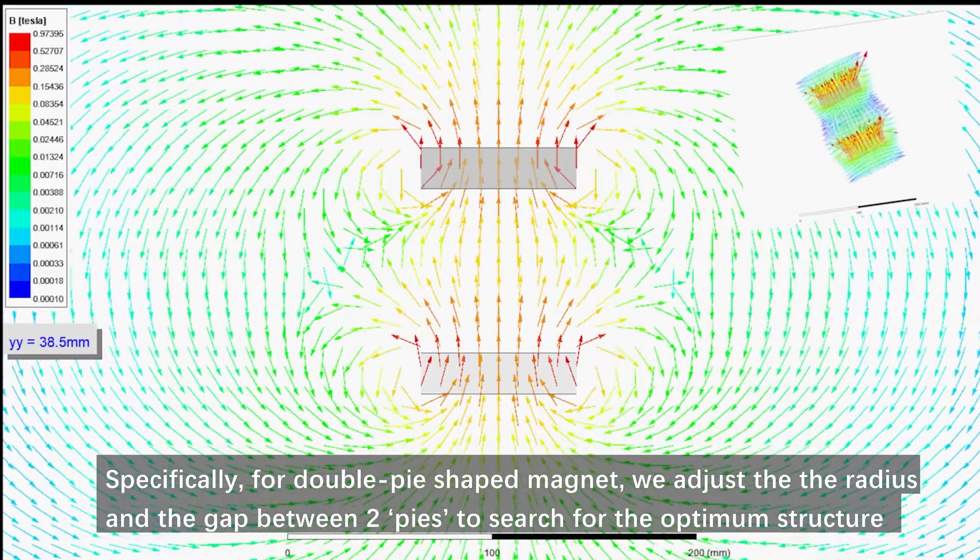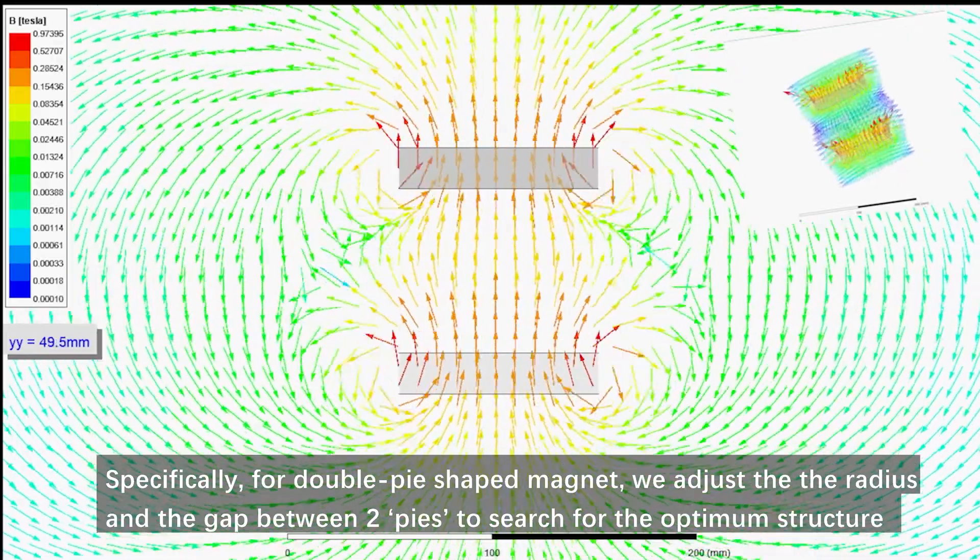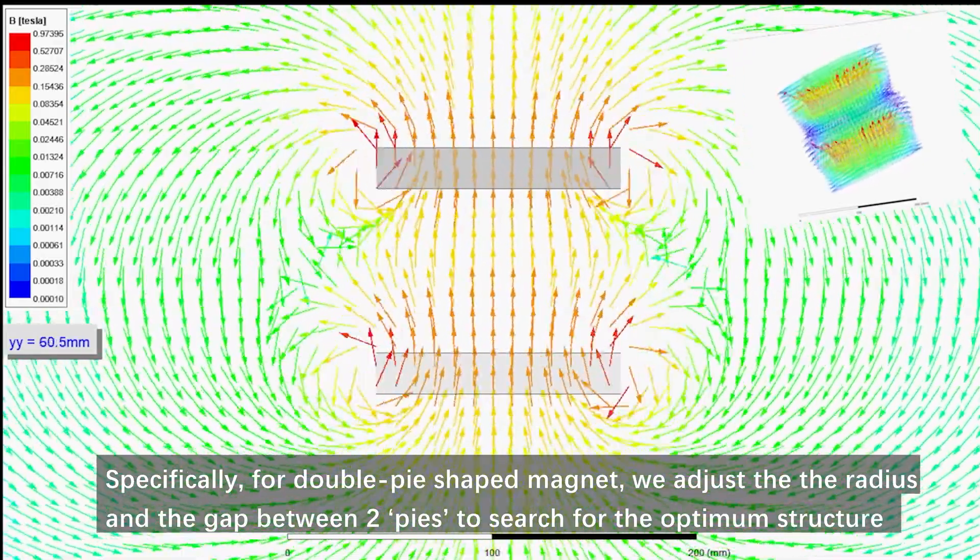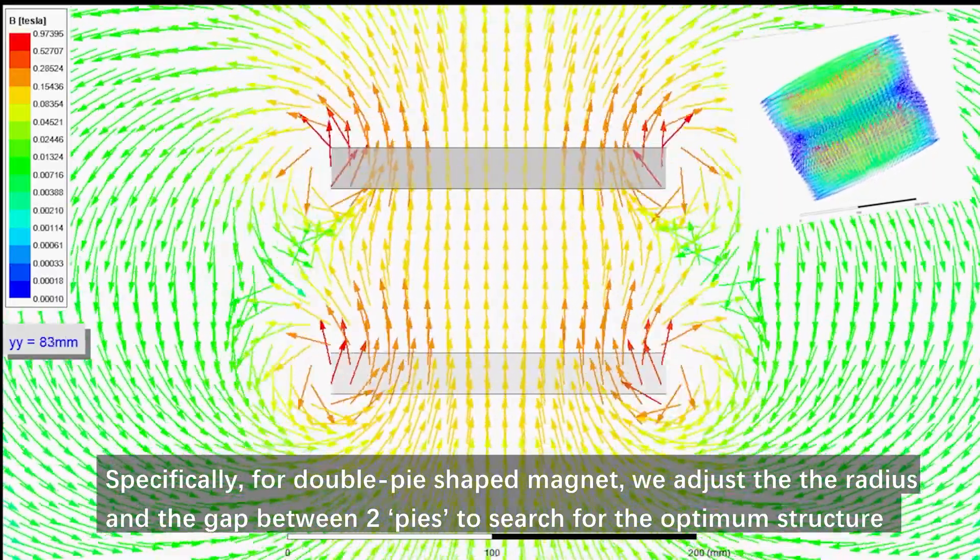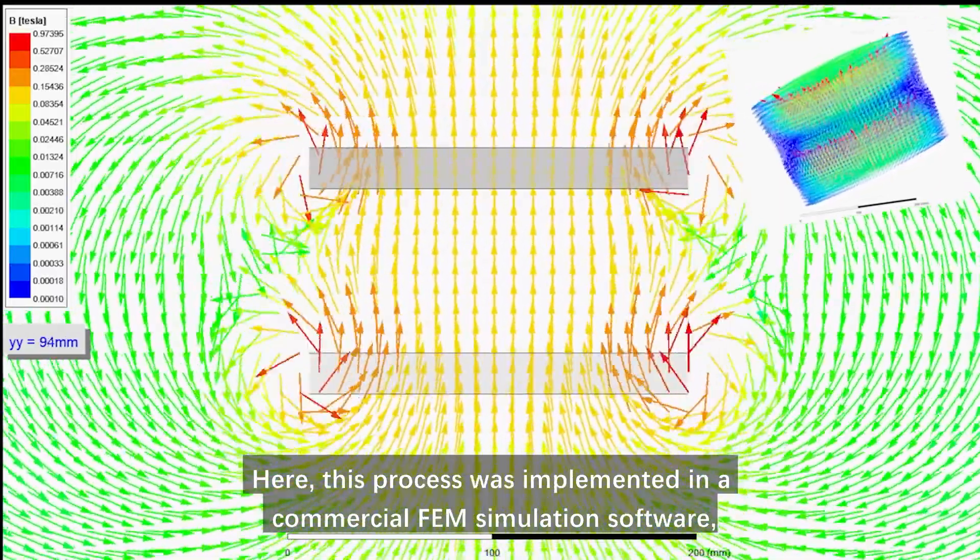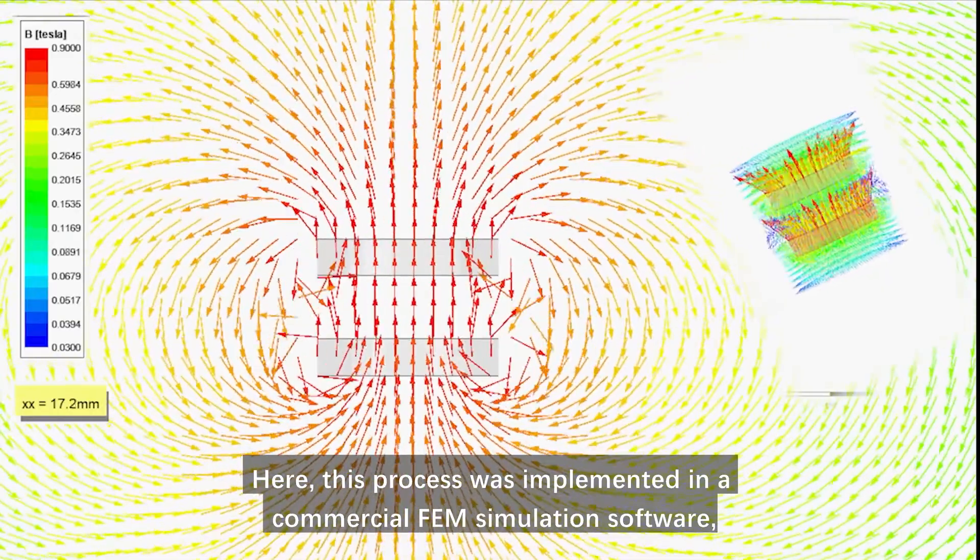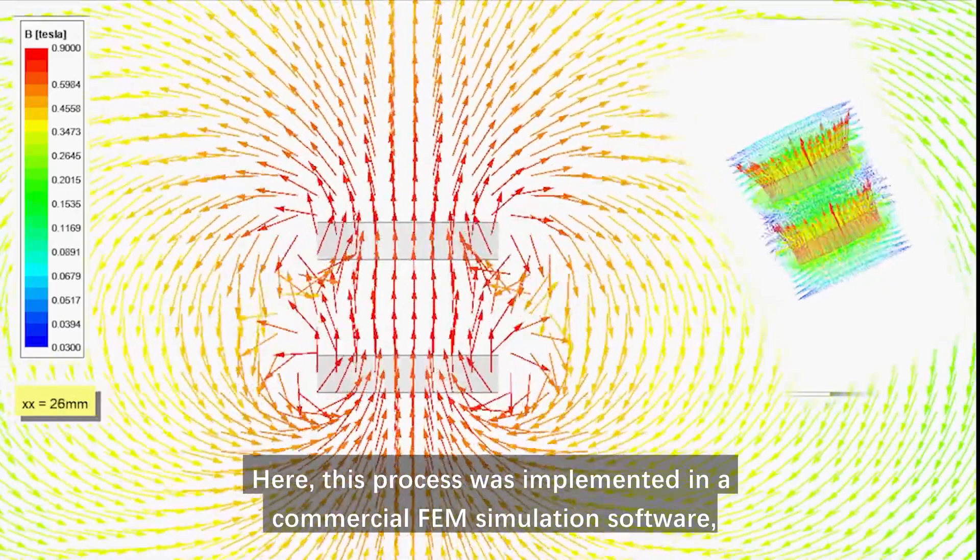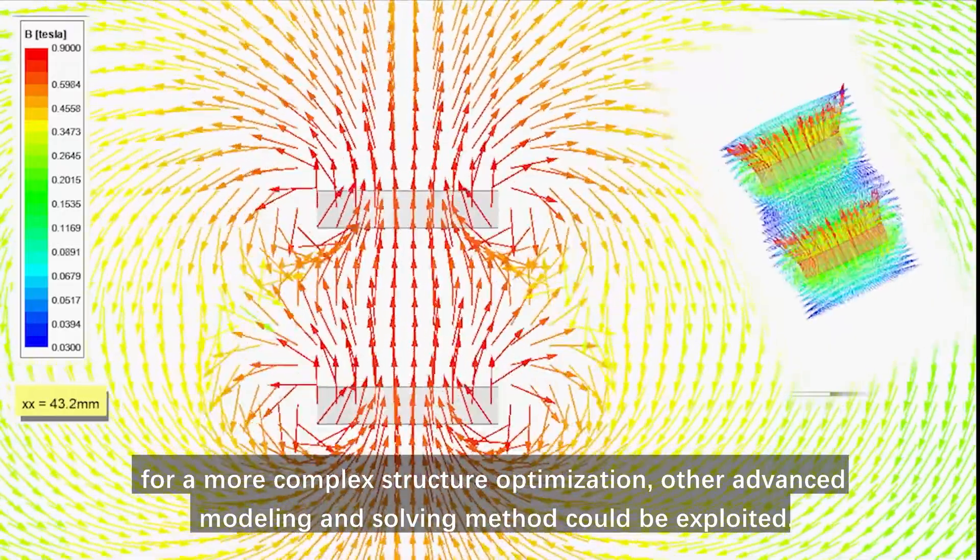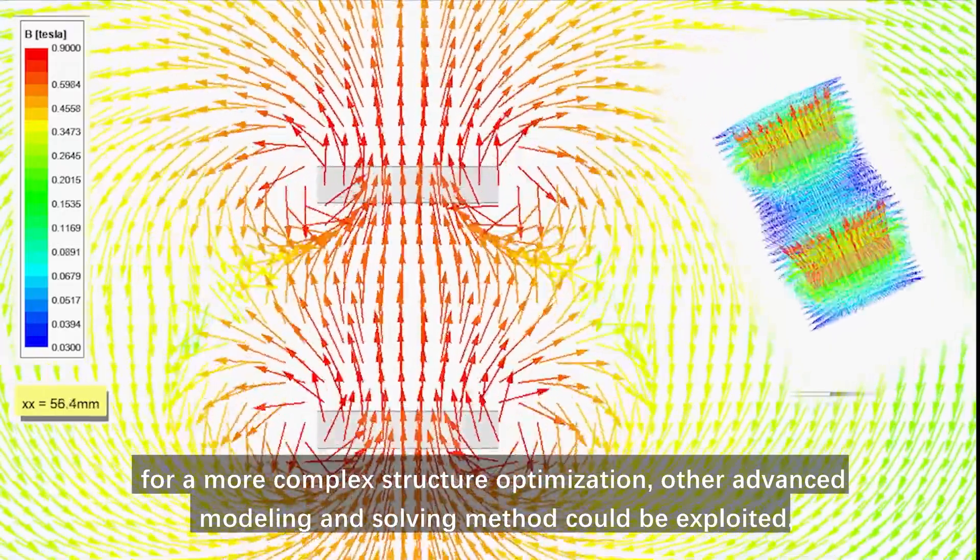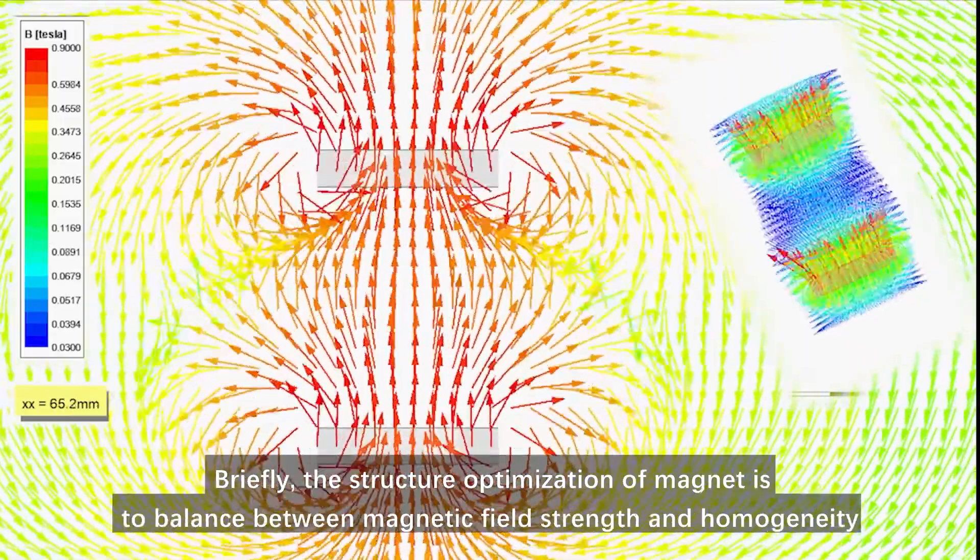Specifically, for double-pie-shaped magnet, we adjust the radius and the gap between two pies to search for the optimum structure. This process was implemented in a commercial finite element method simulation software. For more complex structure optimization, other advanced modeling and solving methods could be exploited.